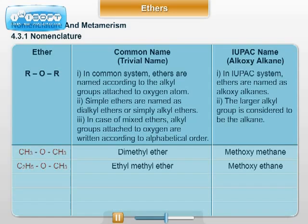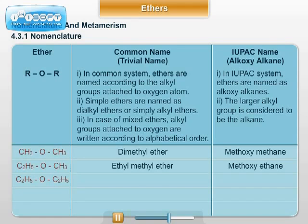A point to be noted: C₂H₅OCH₃ is methoxyethane and not ethoxymethane, because here the larger alkyl group, ethyl, is considered to be the alkane, hence the name methoxyethane. Example three: C₂H₅OC₂H₅ — diethyl ether, IUPAC name: ethoxyethane.